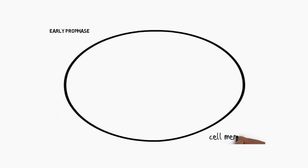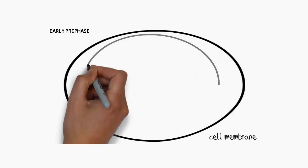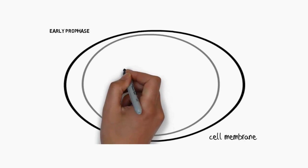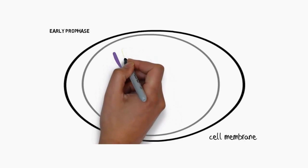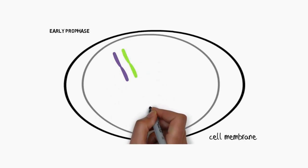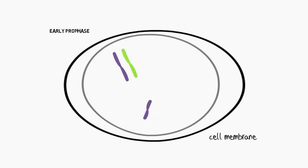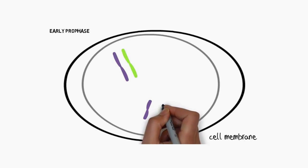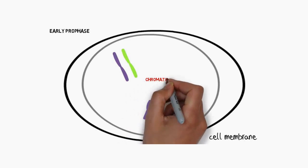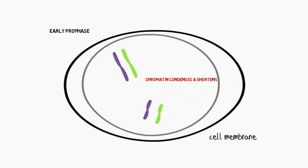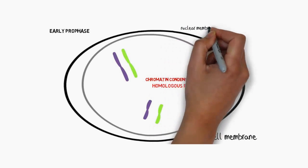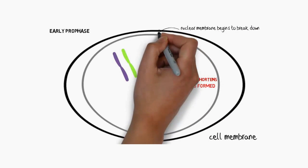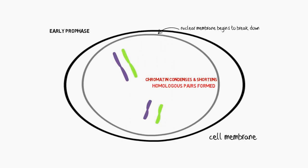The next phase is early prophase. We have our cell membrane and nuclear membrane drawn in, with cytoplasm between them. We can see our homologous chromosomes being drawn — at this stage, although they've been duplicated, we're just seeing them as single. The chromosomes condense and shorten in early prophase and homologous pairs are formed. It is also when the nuclear membrane begins to break down.